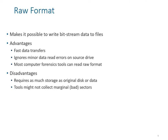Raw format: there is essentially one practical way of copying data for evidence — preservation and examination. We copy the data so we can preserve it over the longer term. We must ensure the main data has not been altered in any way, so whatever image we acquire of the hard drive should be a 100% replica of the infected drive. Advantages include fast data transfer, ignoring minor read errors, and compatibility with most forensic tools.